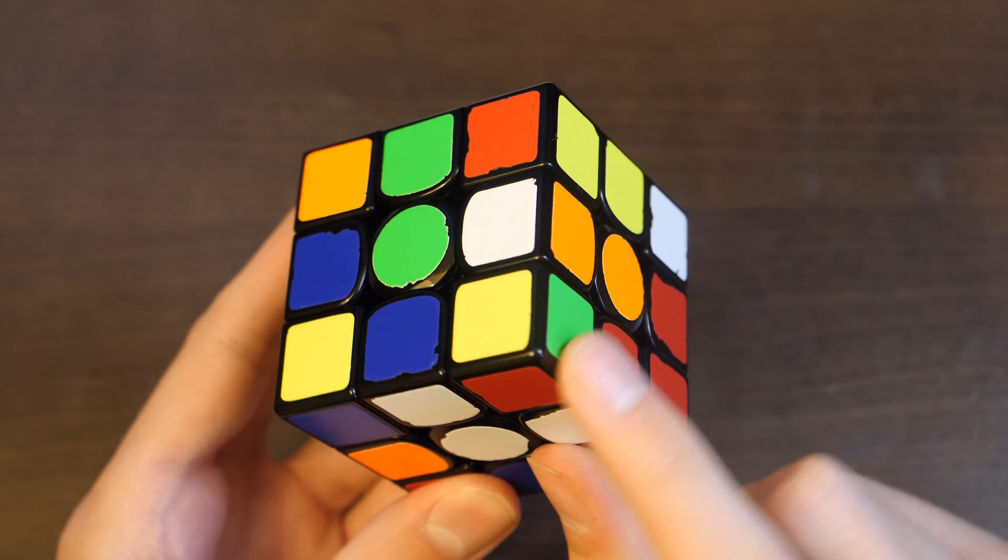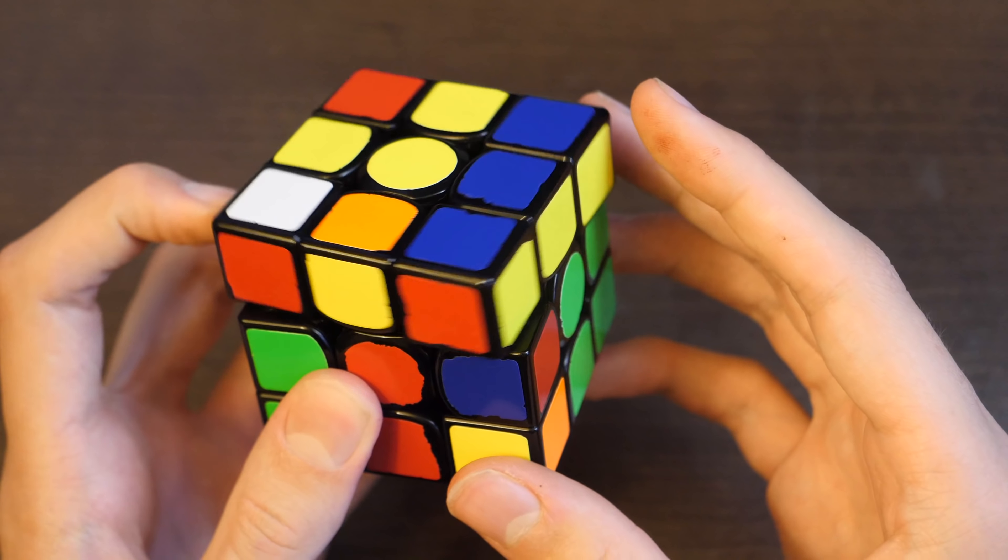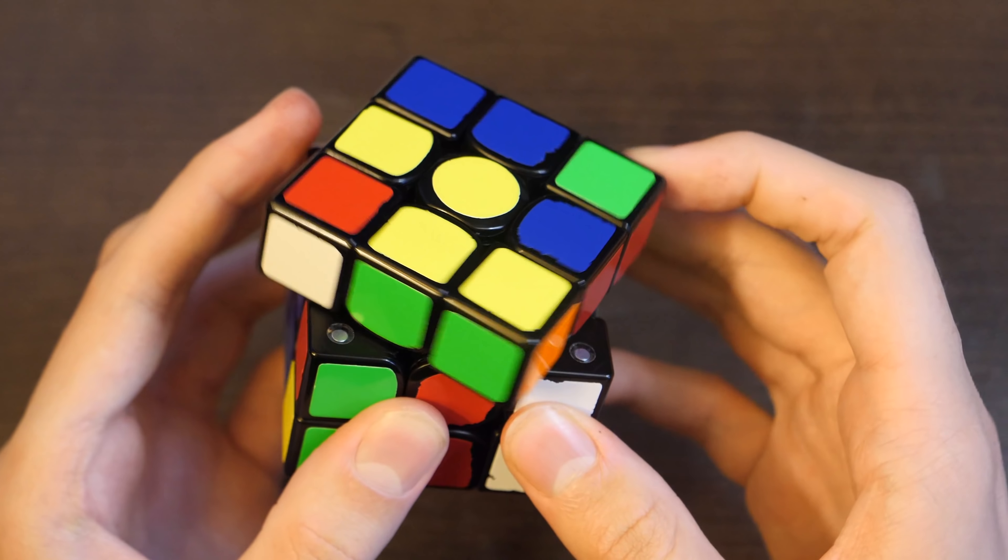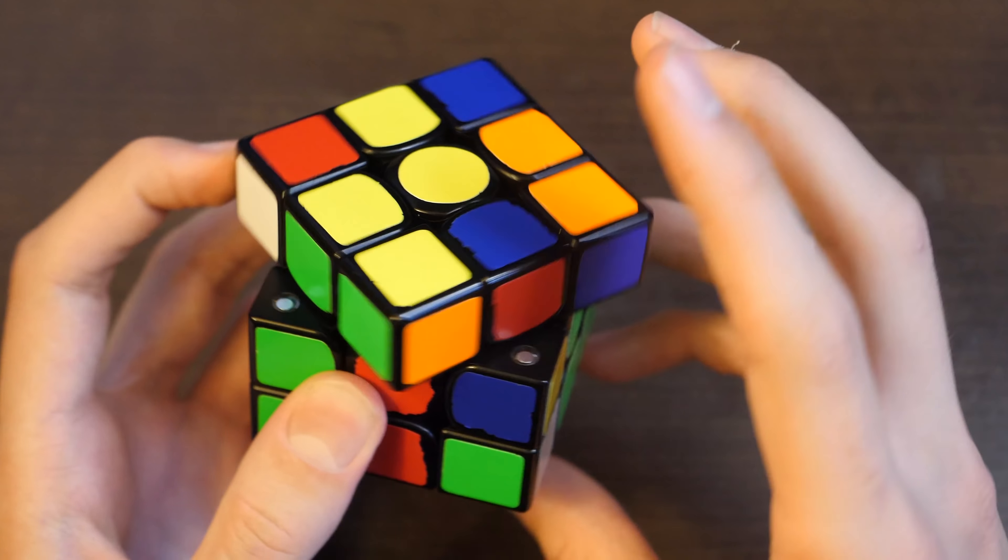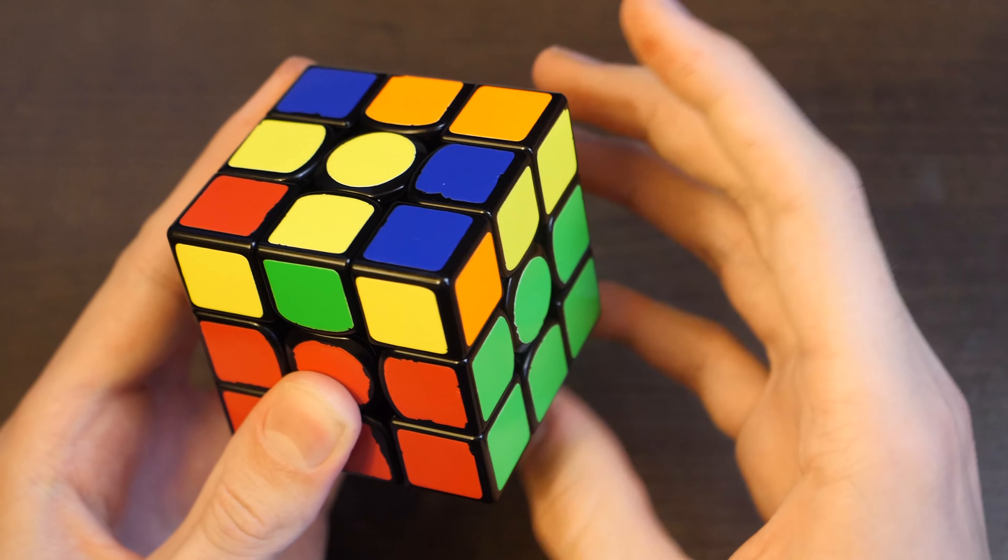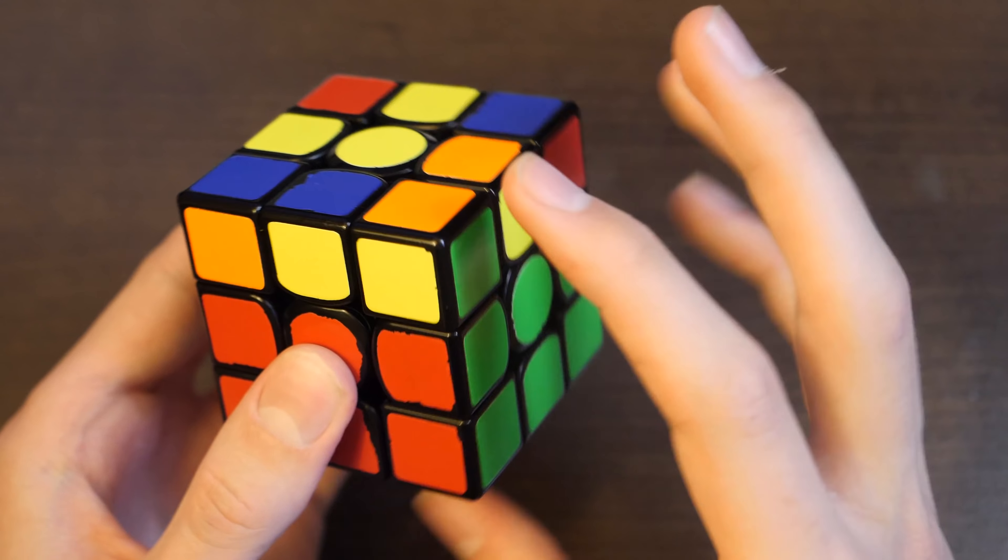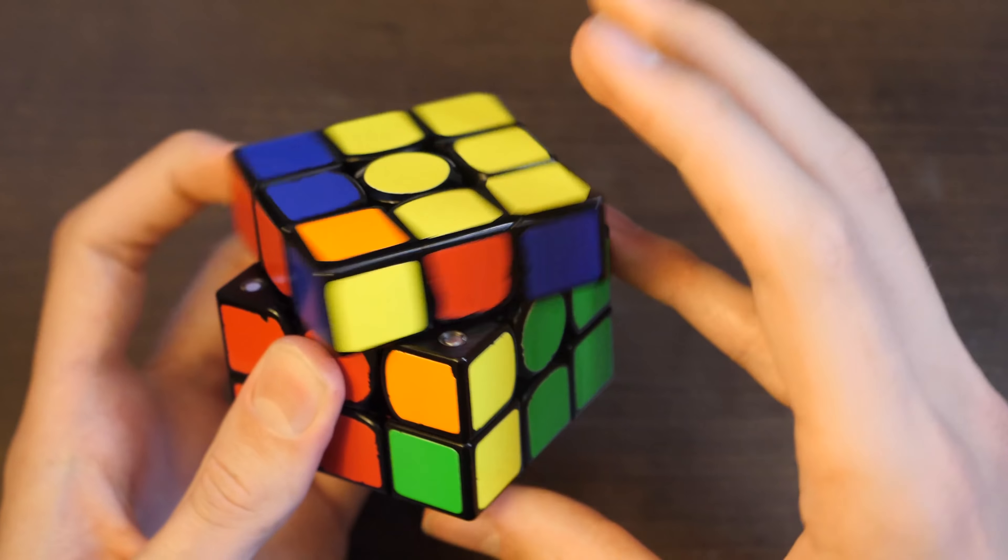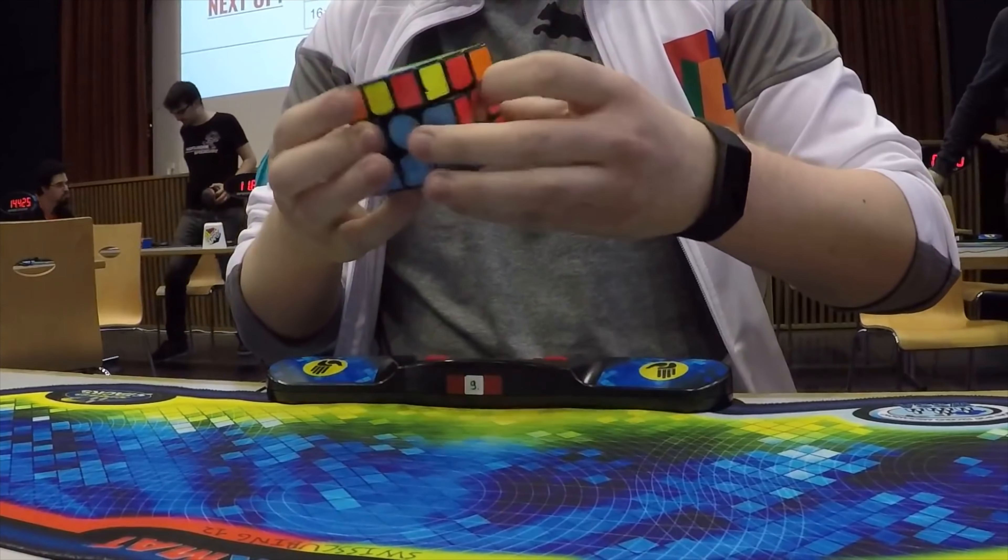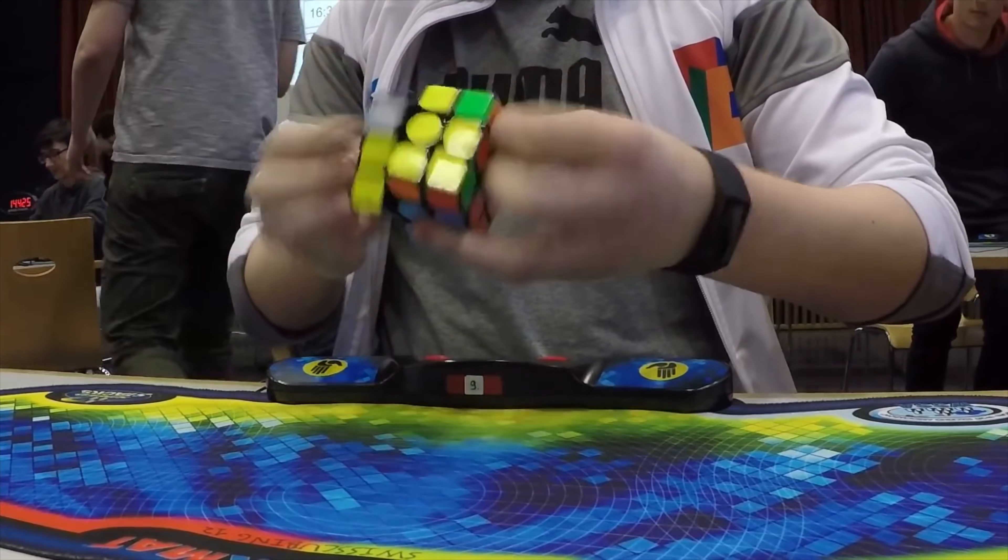And he solves it in a way that actually sets up this pair, which is pretty nifty. So then he solves that pair. Then he goes for these two, not rotating, very nice. And then these two. A very quick TPS optimized solution. OLL and PLL.